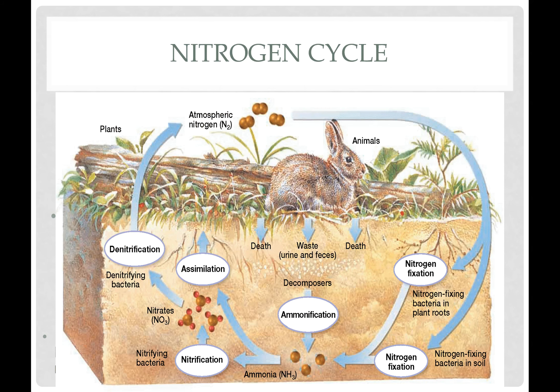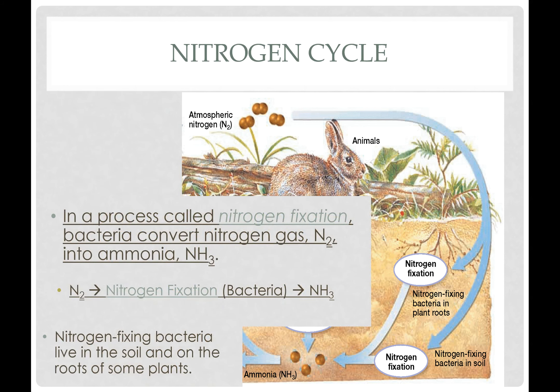Here is what the nitrogen cycle looks like. We're going to go through all the phases — a lot of big words on the screen can be a little intimidating. A lot of the work done for the nitrogen cycle is actually done by bacteria, and a lot of the conversions of the different types of nitrogen are done by bacteria. The first thing, starting from the atmosphere, is nitrogen fixation.